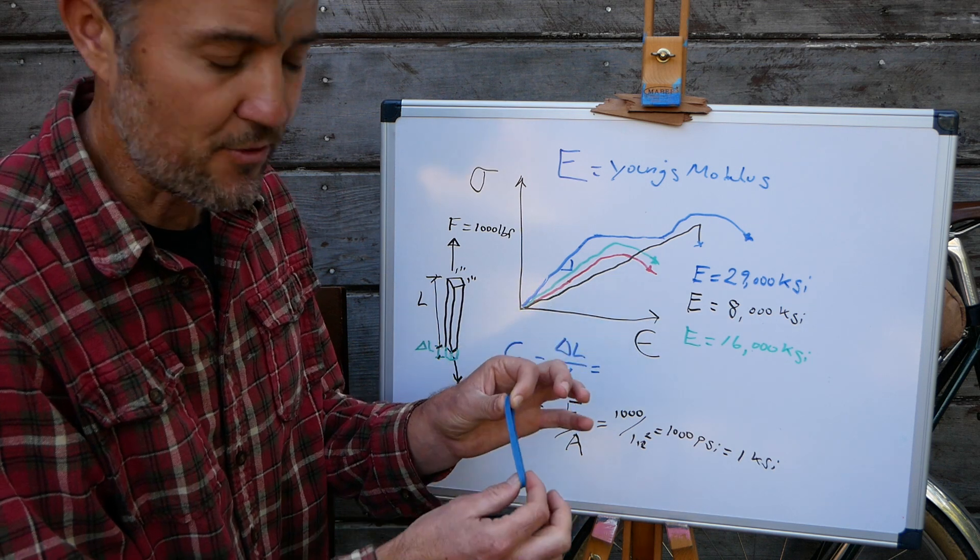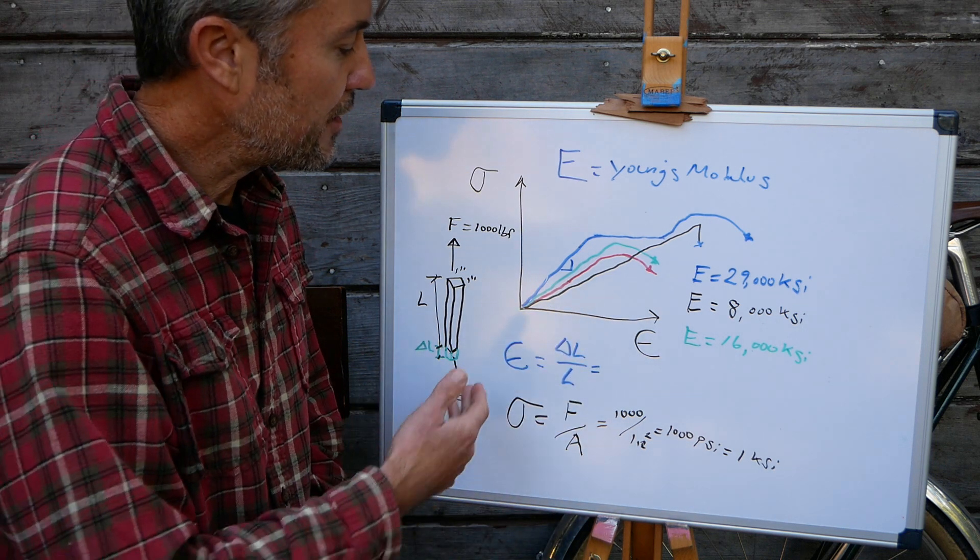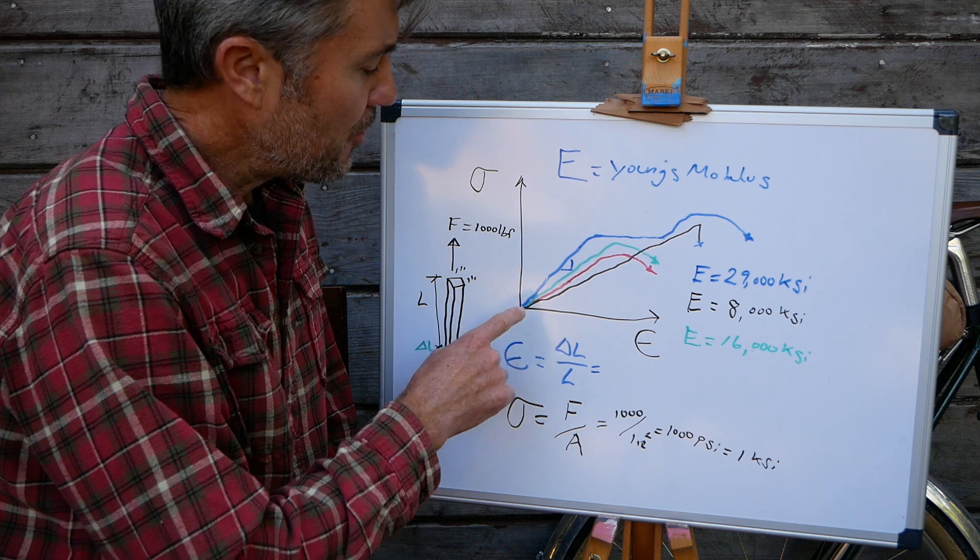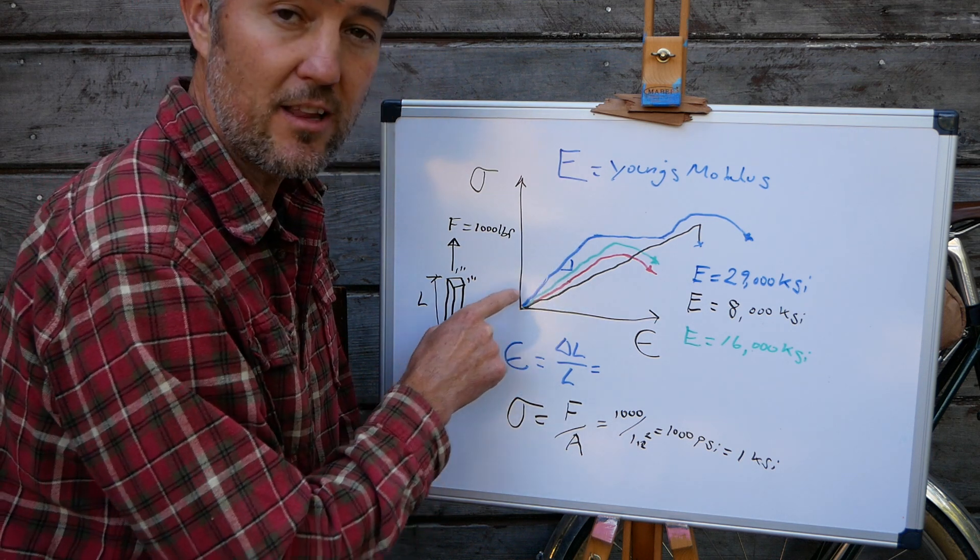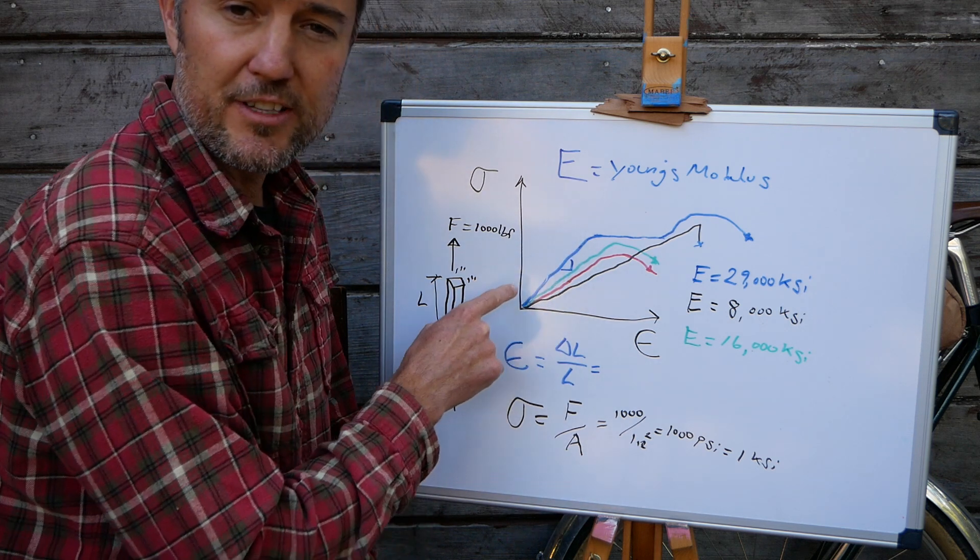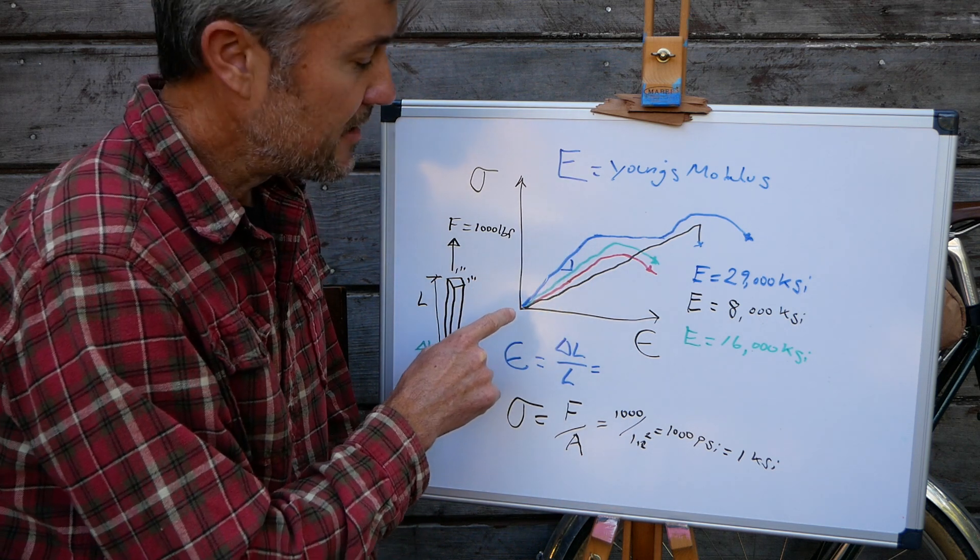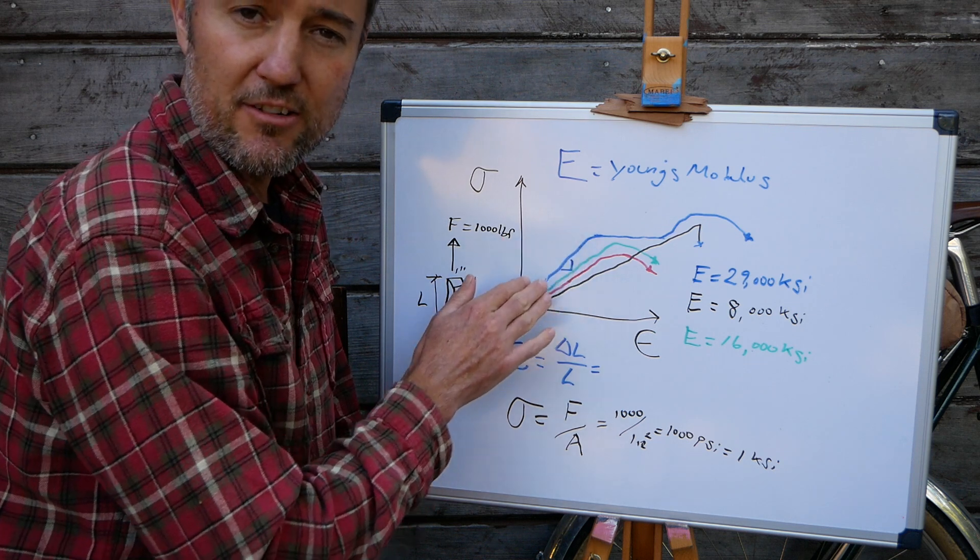They will not be permanently deformed. So when you look at the stress strain diagram, when there is a linear relationship where you have more or less a straight line, that is what's called the linear elastic state. So any material within its linear elastic state can be defined as a line with a slope.